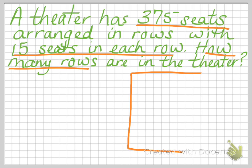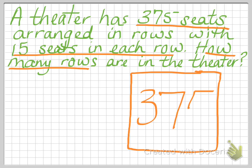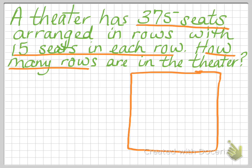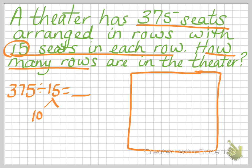Here's how we use an array to figure this out. I'm going to draw an array and I know that in the center is 375 seats. What I don't know is exactly what the numbers are on the two sides. I do know that one of those numbers is 15. So I've got 375 divided by 15 — I have to find out what the quotient is. I'm going to take 15 and break it down into expanded form, which is 10 plus 5. That's going to help me do some division. So I'm going to put 10 up here on the top and 5.